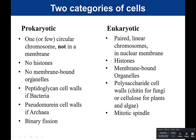Eukaryotic cells have paired, linear chromosomes contained within a nuclear membrane. Humans, for example, have 46 chromosomes arranged into 23 pairs — 23 from mom, 23 from dad — reflecting sexual reproduction. Prokaryotic cells do asexual reproduction, so their chromosomes are not paired. Eukaryotic cells have linear chromosomes inside a nuclear membrane; prokaryotic cells have one or a few circular chromosomes with no membrane.